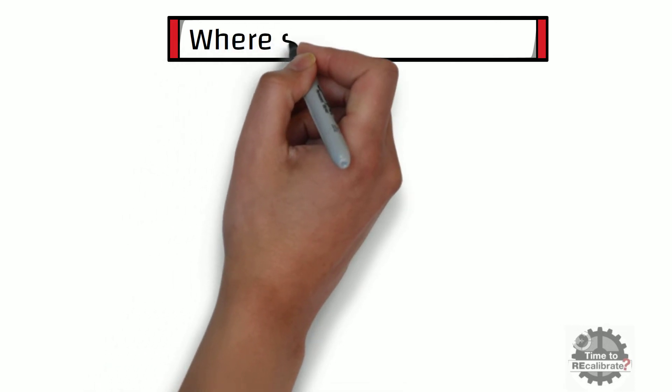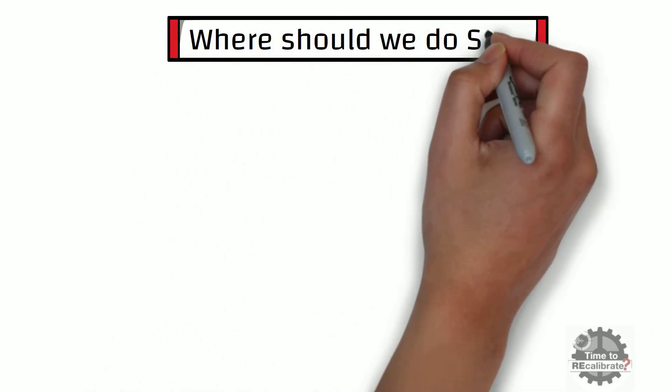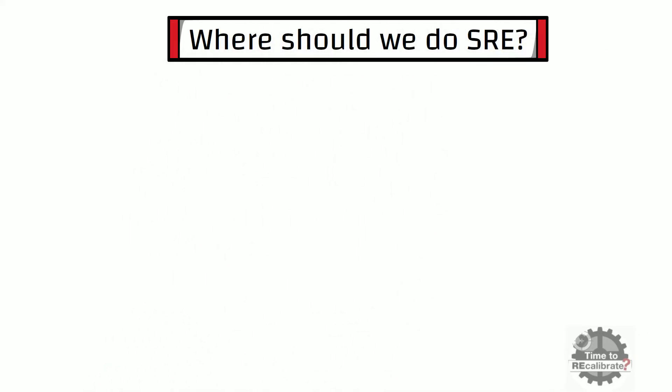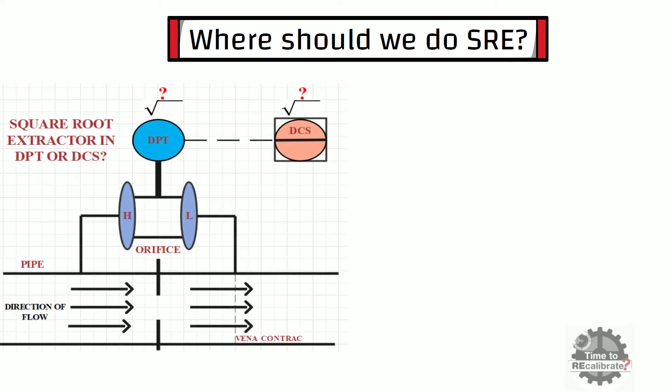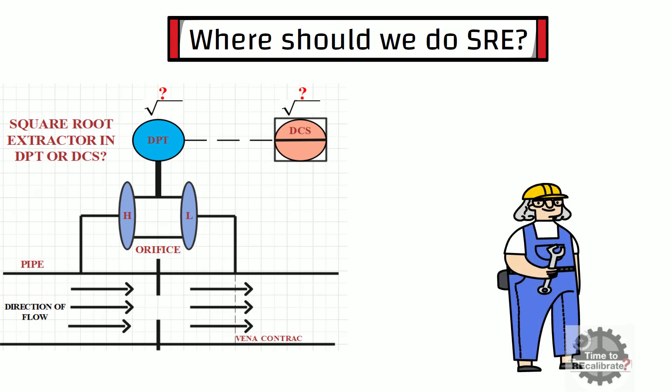In this section, you will learn where should we do the square root extraction. This is a very common question which comes in everyone's mind. Sometimes, it is very confusing for field engineer and system engineer to decide at which end square extraction needs to be done, at transmitter side or DCS side. In this type of situation, proper communication is needed between field engineer and system engineer.